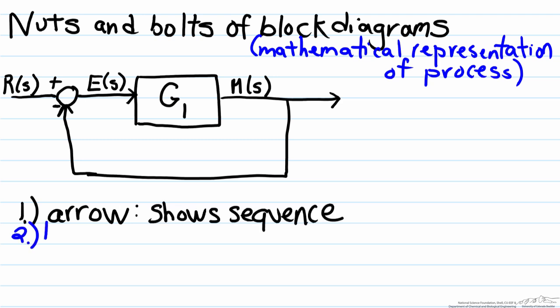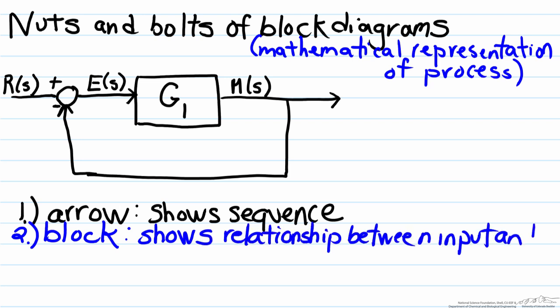The second is the block. The block is a representation of a mathematical model of how an input affects an output. A block shows the relationship between the input and output. In our diagram here, this is the block, and G1 shows how the input E impacts the output M.